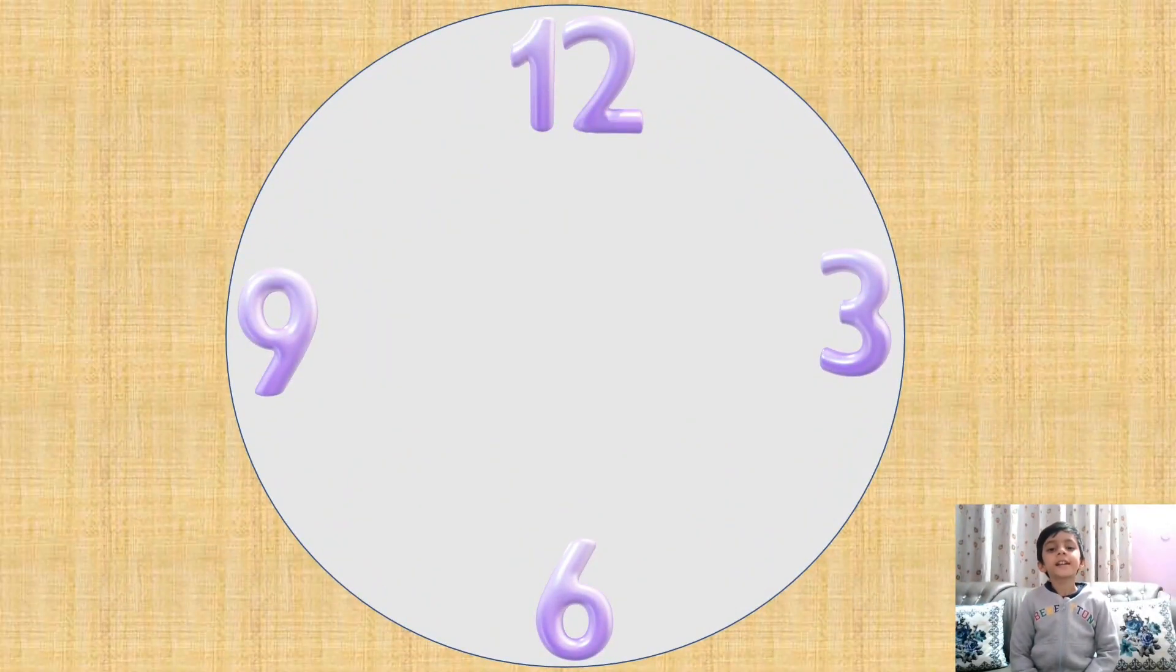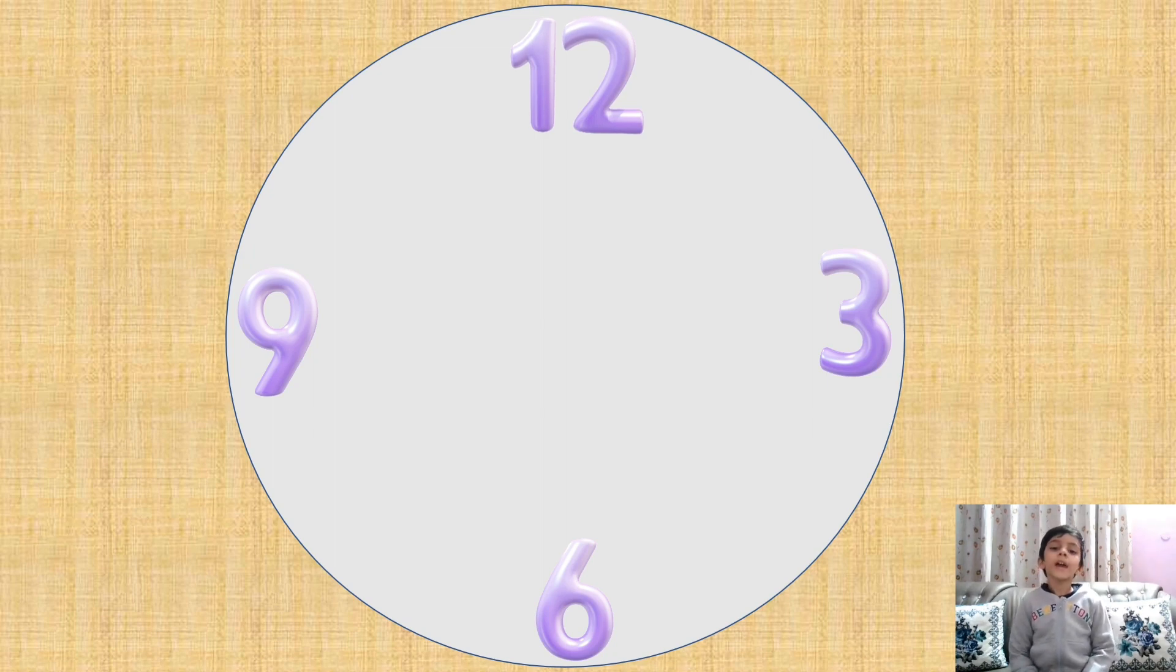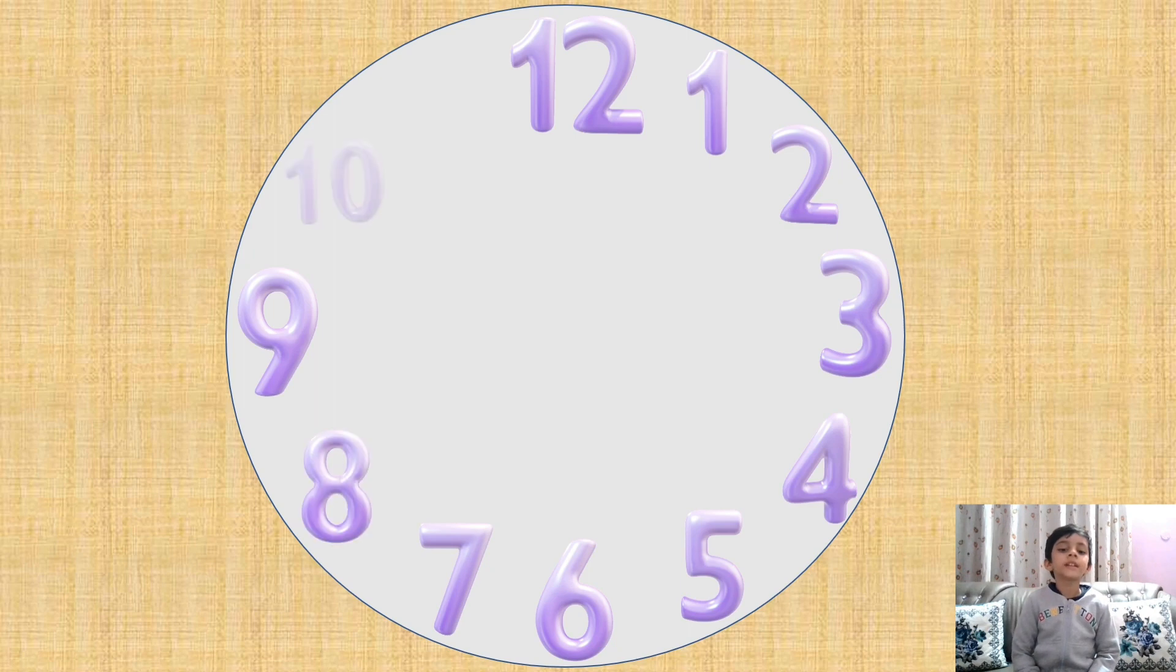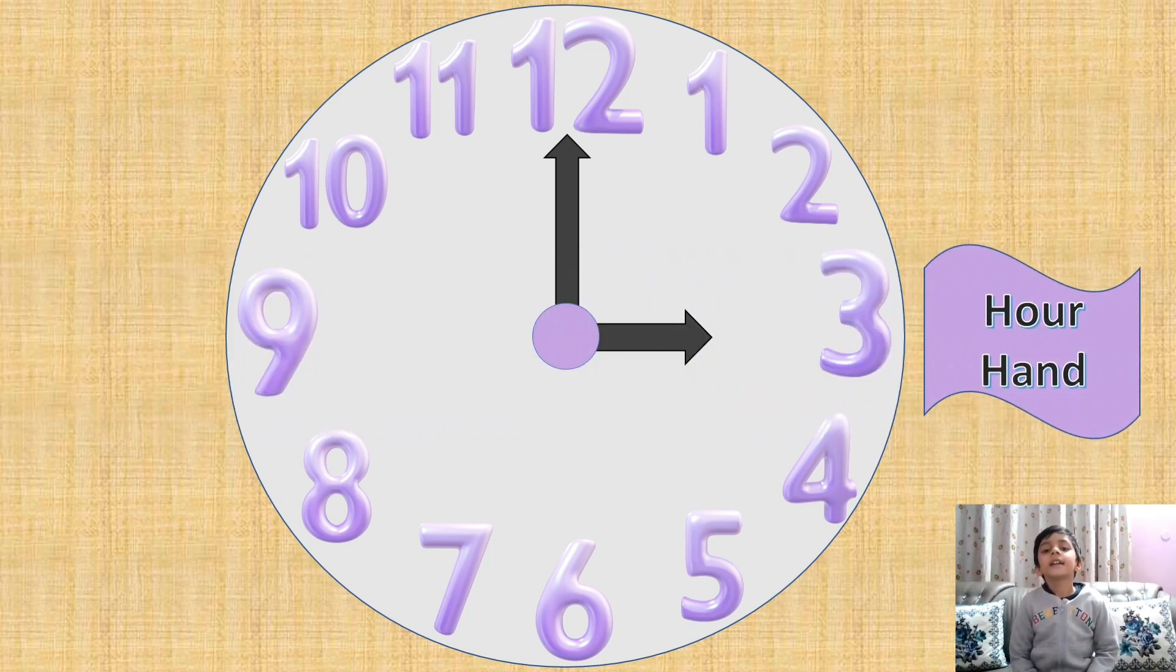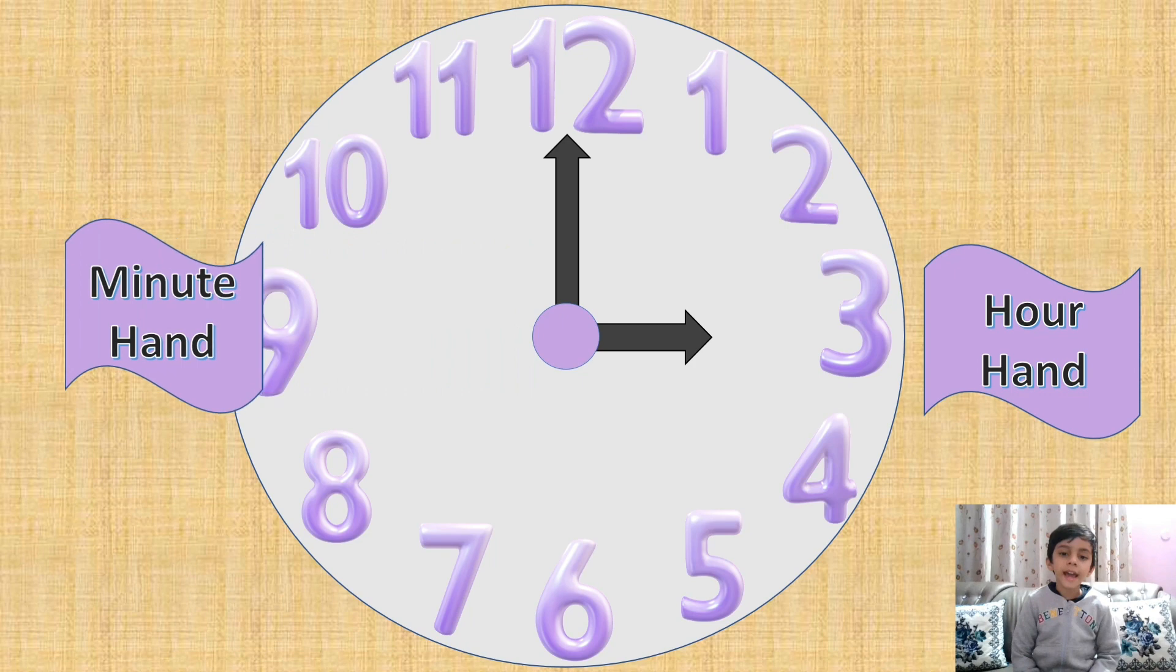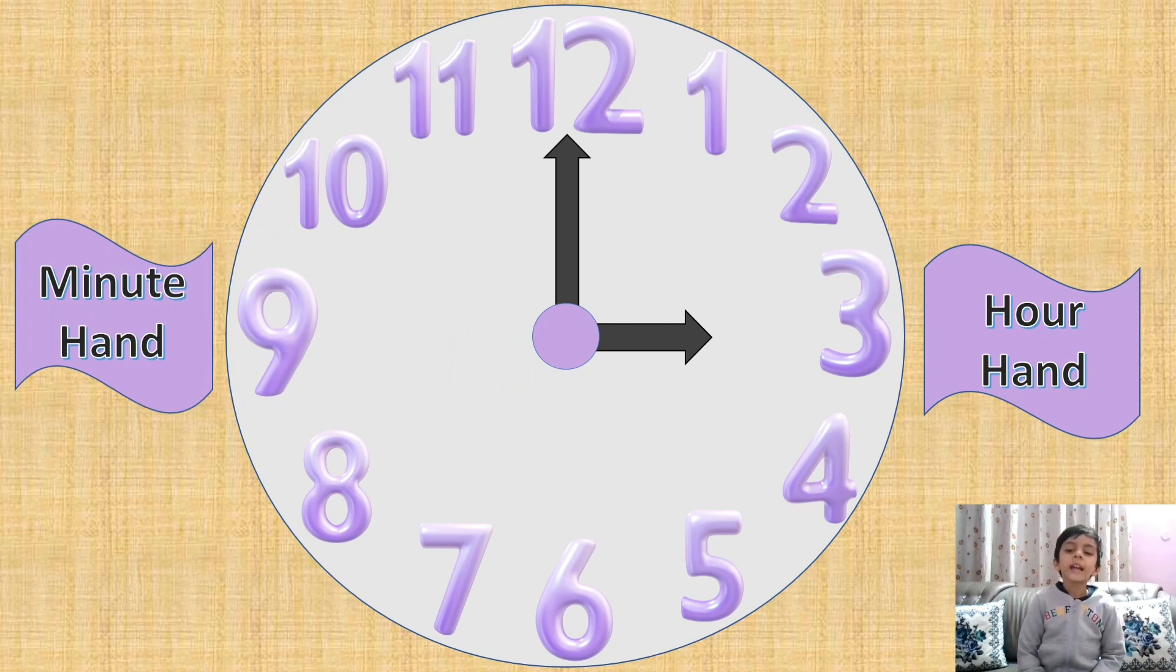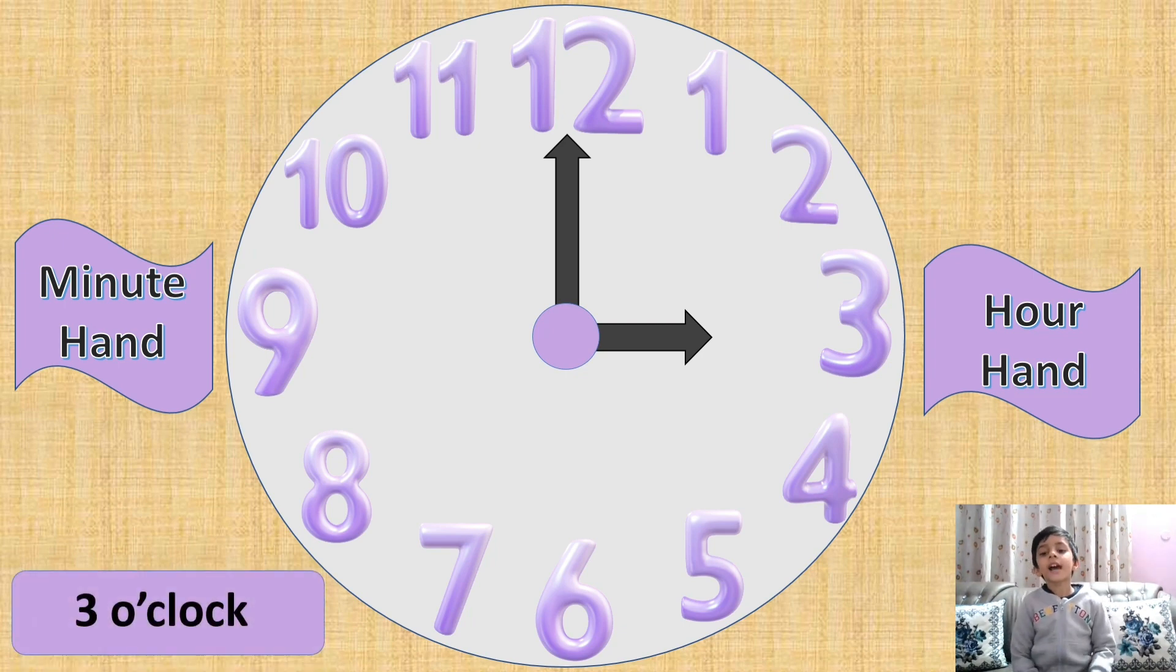This is a clock face. It has 12 numbers: 12 at the top, 6 at the bottom, 3 on the right, and 9 on the left. All other numbers are in between these numbers. There are two hands of the clock. The small one is the hour hand and the big one is the minute hand. The hour hand is pointing to 3 and the minute hand is pointing to 12, so 3 o'clock is the time.